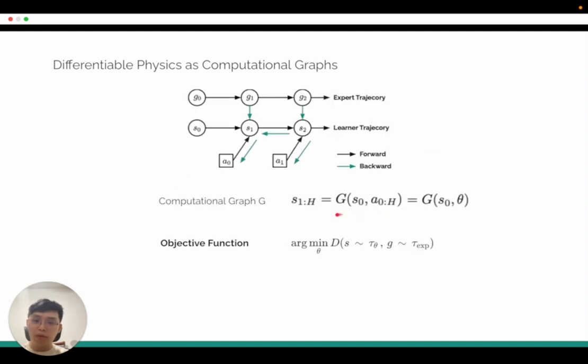So having this rollout of future states, we want to directly compare this rollout state with the expert trajectories. We have our learner trajectories and we compare with the expert trajectories to minimize the distance between the learner and the expert trajectories by tuning the parameter theta of our policy.